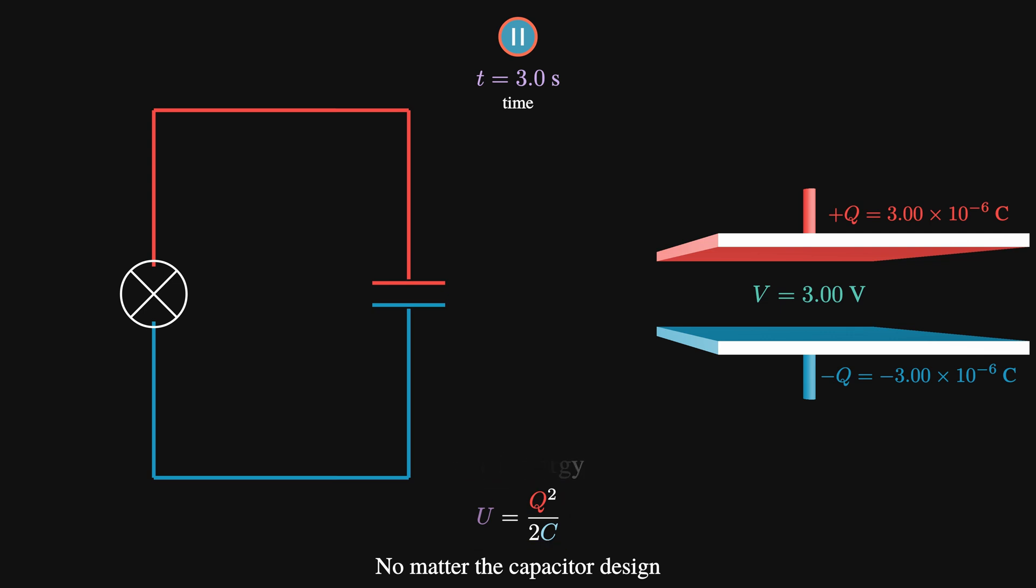This is one of our capacitor energy equations, and the others can be found by simply substituting in our capacitance equation in different ways. If we replace Q with CV, we get U equals a half CV squared, and if we replace C with Q over V, we get a half QV. These equations are all completely equivalent.